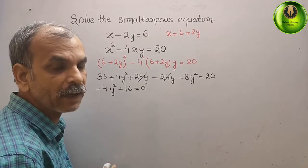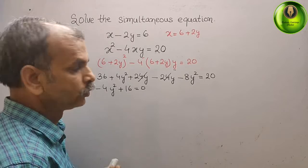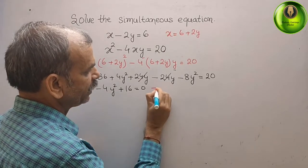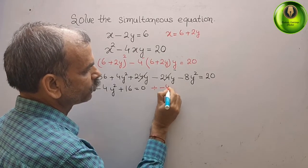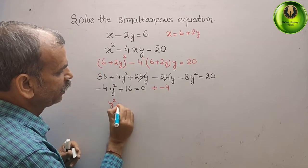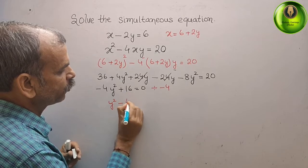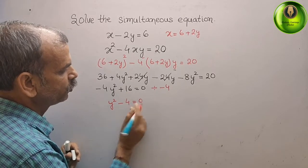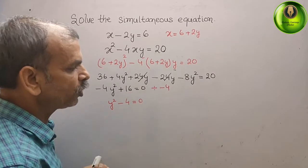Or divide it by minus 4. We will divide here by minus 2. We will get y squared minus 4, that is equal to 0. Bring this minus 4 to your right side.